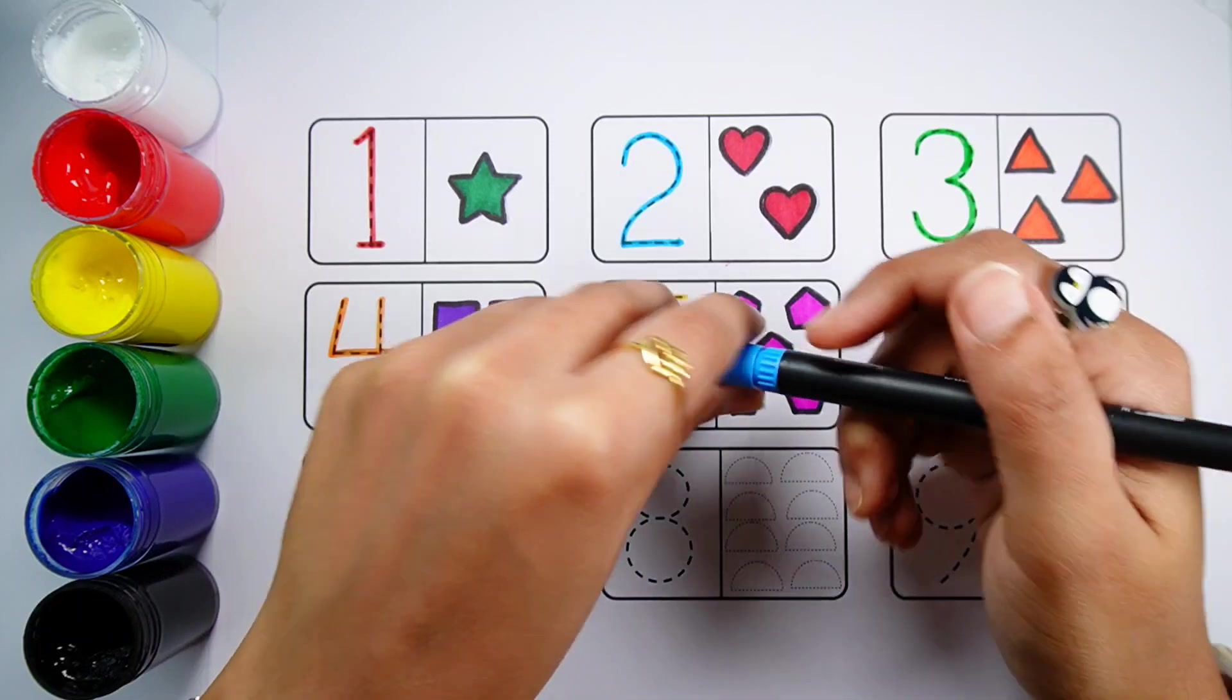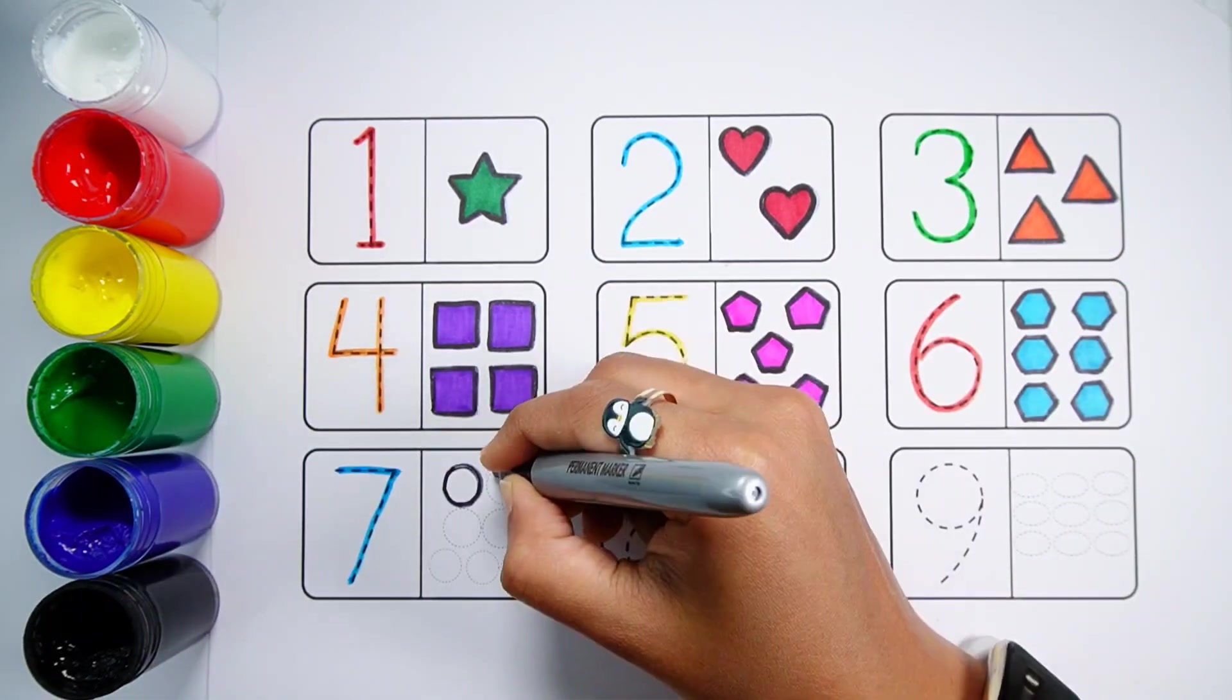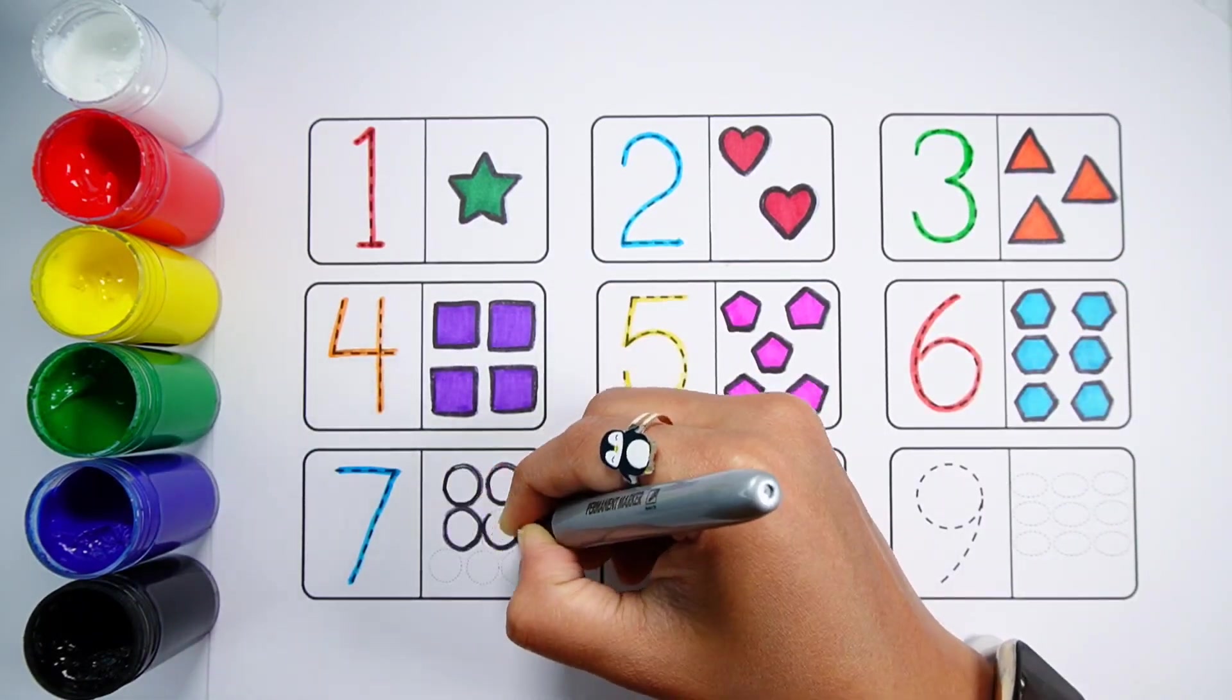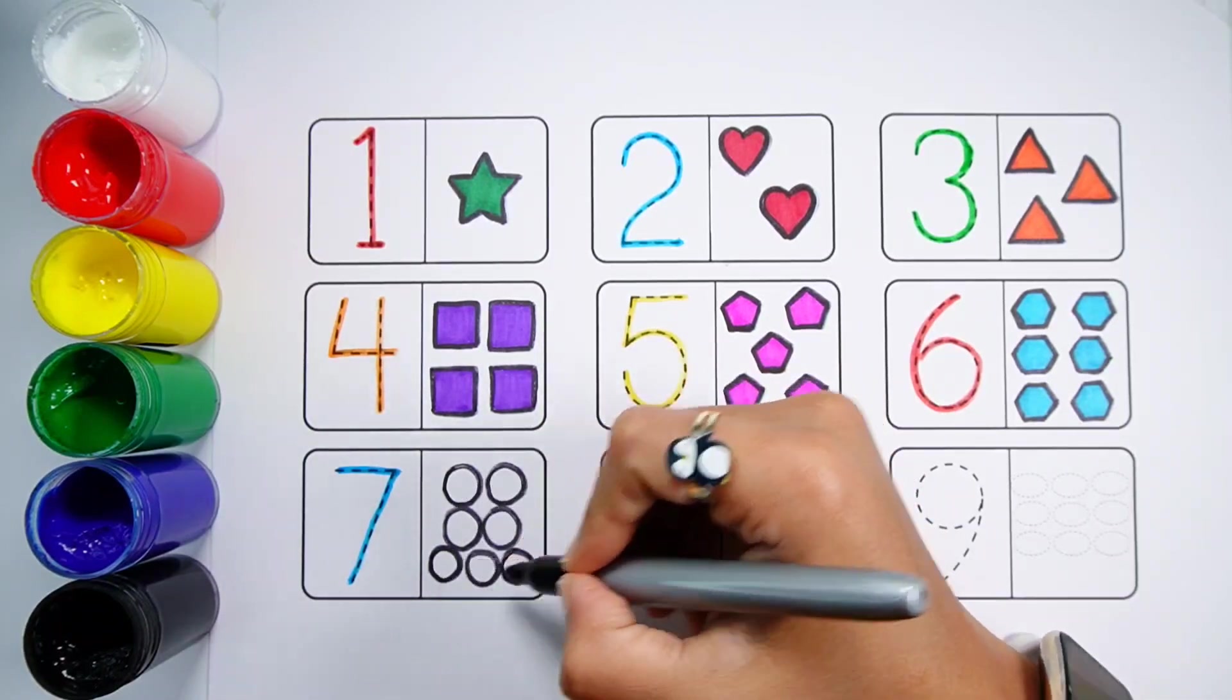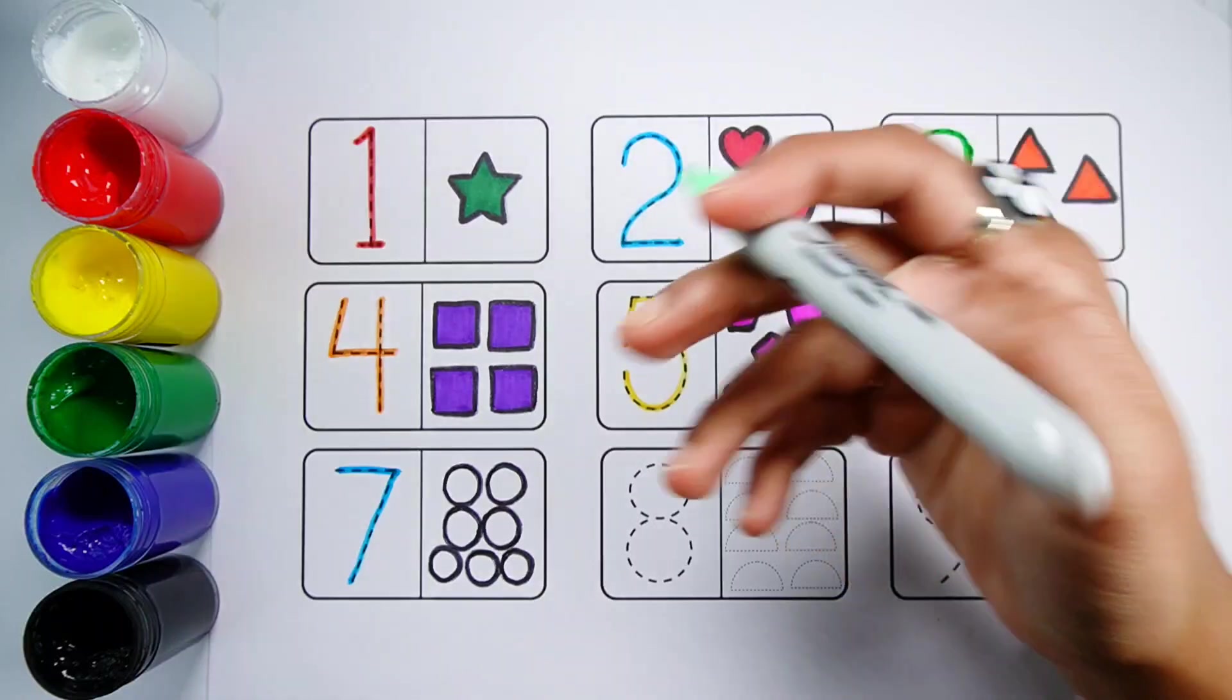Number 7. One Two Three Four Five Six Seven. Seven Circles. Pale Green Color.